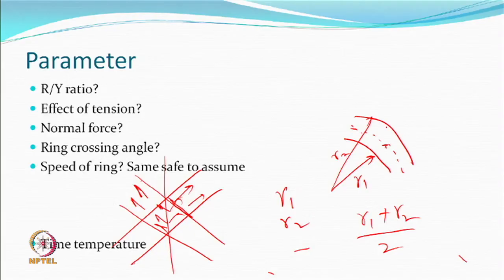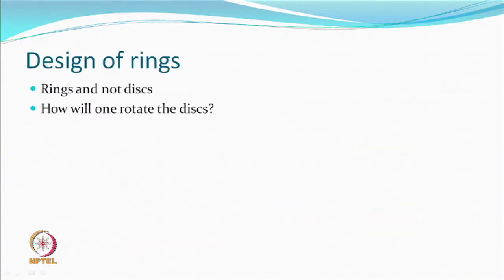Time and temperature for both systems will have to be optimized based on the material that you are looking at — this does not change in any manner. Also, these are rings, not discs. We had asked last time how you would rotate a ring — a disc was a disc which you had to rotate accurately.